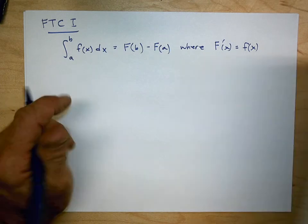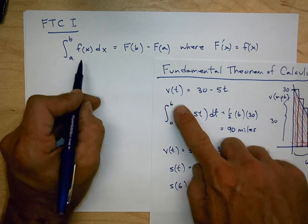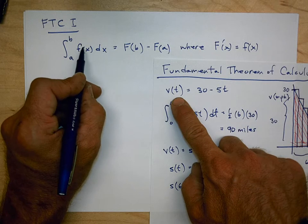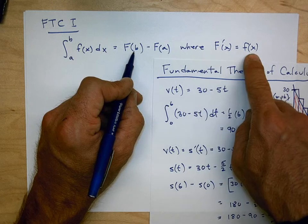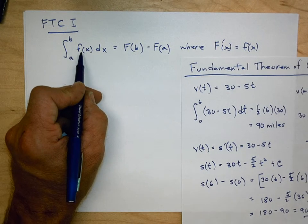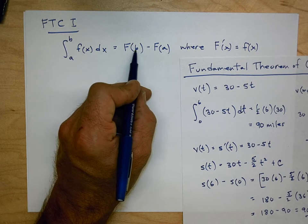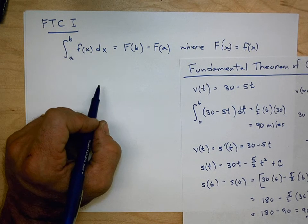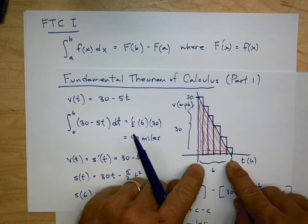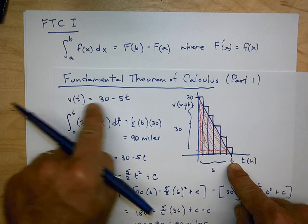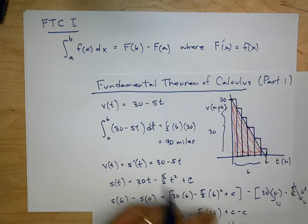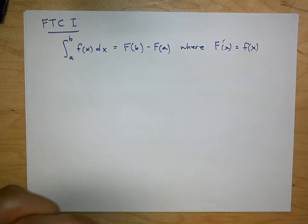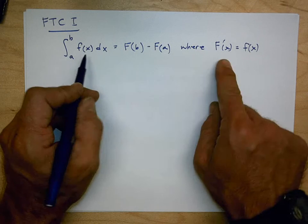So going back to what we were looking at: little f was our velocity, and big F was our distance function, because the derivative of distance equals velocity. If we know the antiderivative of a given function, we can take that antiderivative, evaluate it at the endpoints of our interval — in this case 0 and 6 — and that's exactly what we did. We took the antiderivative, evaluated it at two endpoints, and that gave us the area under the curve. That will be true as long as these conditions are satisfied.